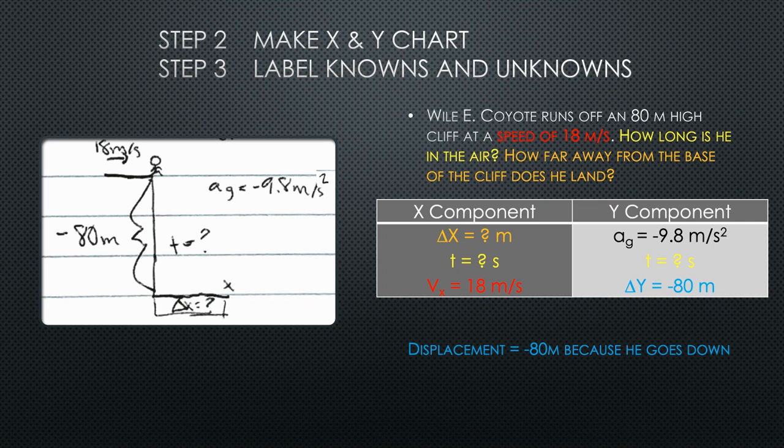And the second question is referring to how far he lands horizontally from the bottom of the base, or delta X, which is the second unknown variable. Remember that time is shared by both the X and Y component.